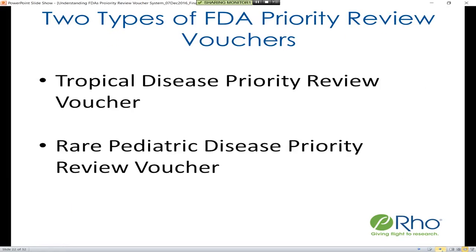There are two types of FDA priority review vouchers: the first is the tropical disease priority review voucher, and the second is the rare pediatric disease priority review voucher.